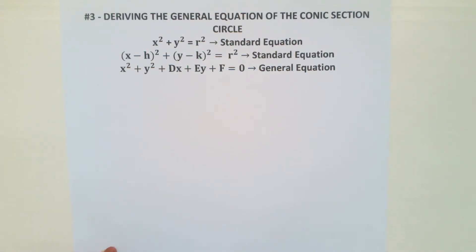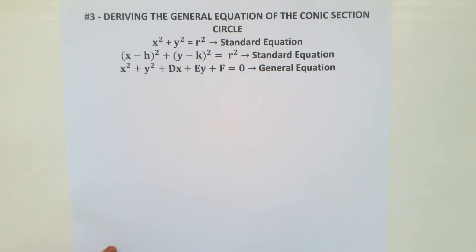In our previous study, the standard equation when the center of the circle is at the origin, meaning the center is (0, 0), is x squared plus y squared is equal to r squared. But if the center does not fall at the origin, the standard equation is x minus h squared plus y minus k squared is equal to r squared, wherein h and k stand for the center of the circle.